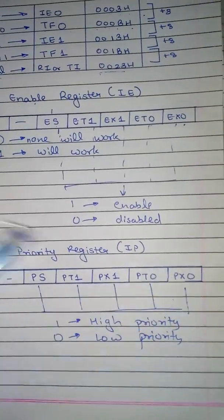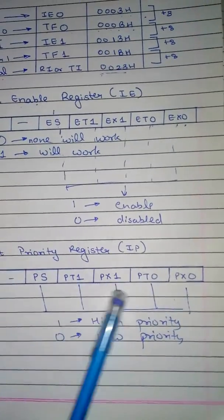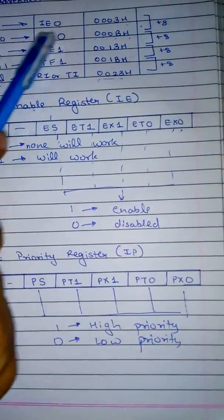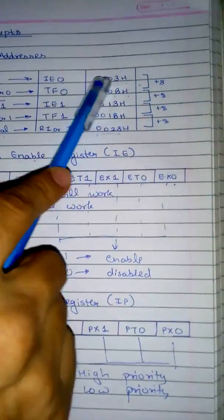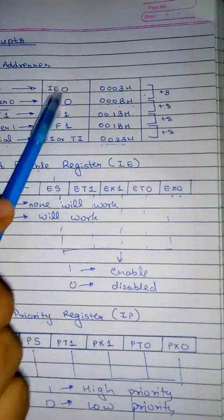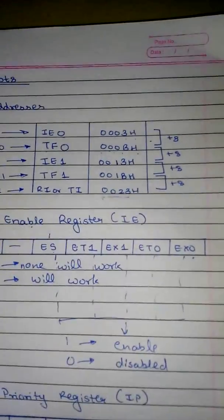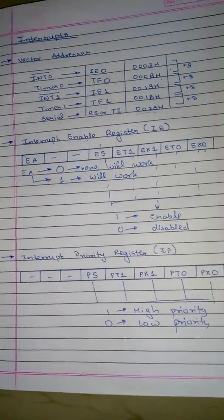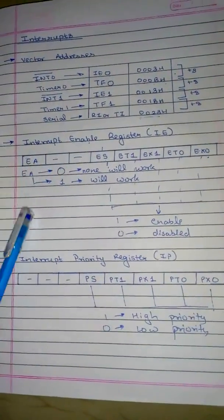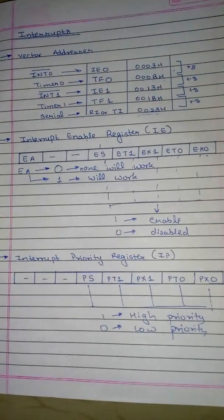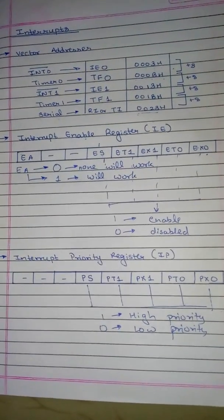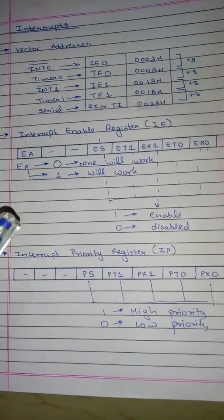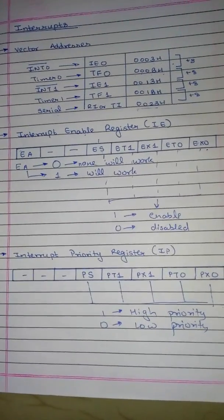For example, if you set PT1 equal to one and all others are zero, then Timer 1 will have higher priority compared to all others — even though INT0 bar actually has the highest priority according to its vector address. So this is all about interrupts: the vector addresses, the Interrupt Enable Register, and the Interrupt Priority Register. Thank you.